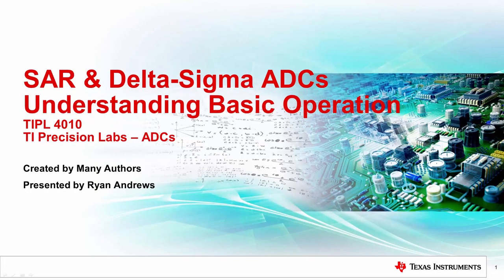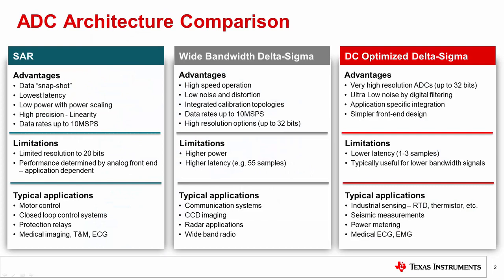Hello, and welcome to the TI Precision Lab series introducing the basic operation of SAR and Delta-Sigma converters. The objective of this content is to give a very high-level understanding of how the two topologies work. This overview, in conjunction with subsequent videos, should help you decide which topology is best for your application. This slide provides a basic summary of the advantages and disadvantages of each topology. Notice that the Delta-Sigma topology is separated into DC-optimized and wide-bandwidth subcategories. This distinction was made because the advantages, disadvantages, and usage considerations are very different for the two different types of Delta-Sigma converters.